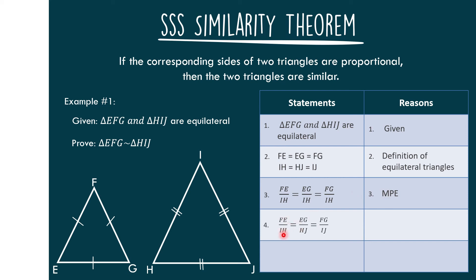Statement number 4: FG over IH is equal to FG over IJ, by substitution — since we know that IH equals HJ and IJ, then we can replace IH with HJ and IJ as well. For our last statement: triangle EFG is similar to triangle HIJ by SSS similarity.